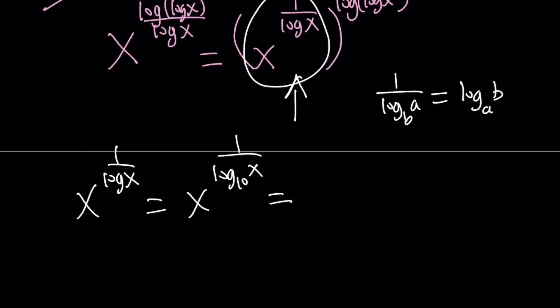it becomes log b base a. So they switch. So we can write this as x to the power log 10 with base x. But then we're going to use the bases rule. This is x, this is x. When they are the same, this is going to be the answer. I'm using a shortcut here. You can also do it a longer way. And this becomes 10.